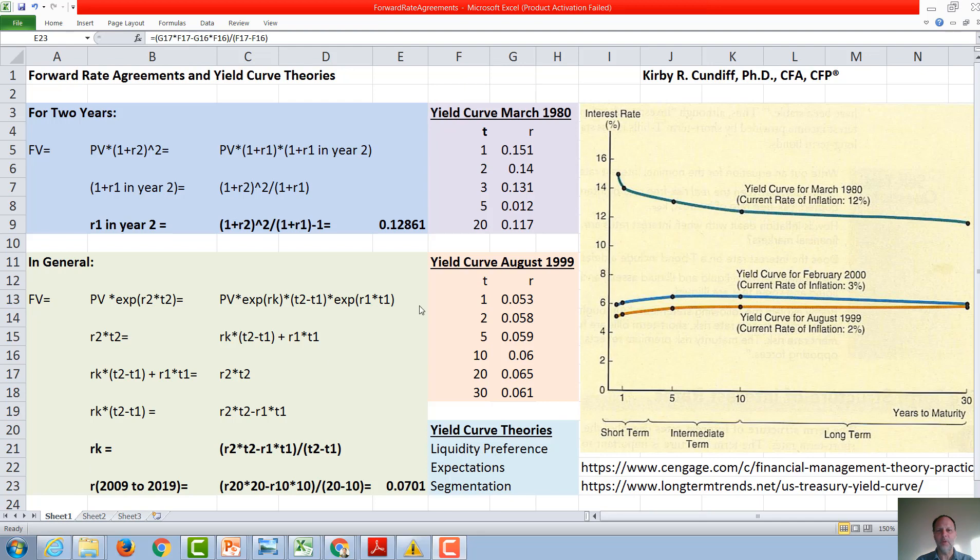We could apply this, for example, to the yield curve in August 1999, this upward sloping yield curve here, and say we want to figure out what the forward rate would be between 10 years in the future and 20 years in the future, or between 2009 and 2019. So how would we calculate that? We would take r20×20 years minus r10×10 years divided by 20 minus 10 or 10 years, and we would get this, 1.07. So we're going to take 0.065×20 minus 0.06×10 divided by 10, and we get 7%.